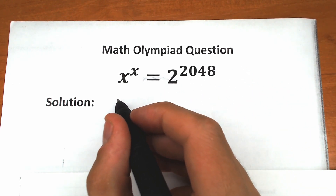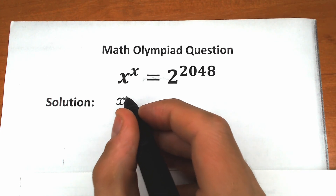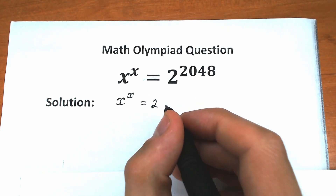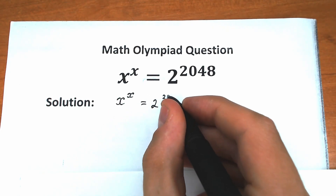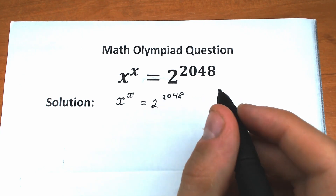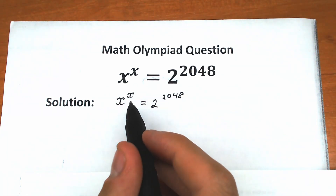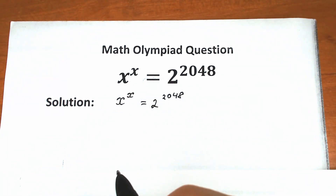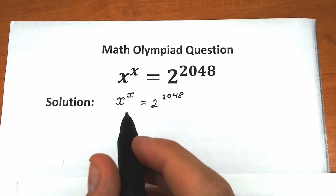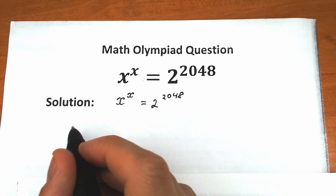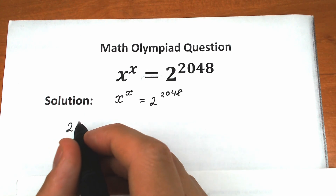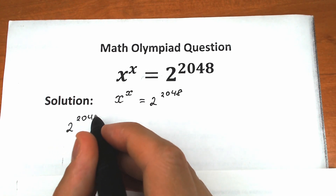Let's rewrite our challenge. So we have x to the power x equal to 2 to the power 2048. On the left hand side we have x to the power x, but what about the right hand side? Let's look closely at this expression — we have 2 to the power 2048.